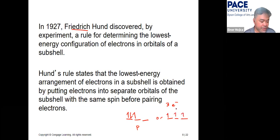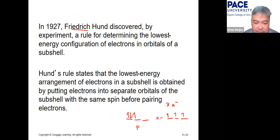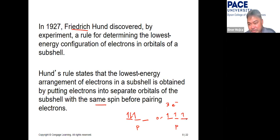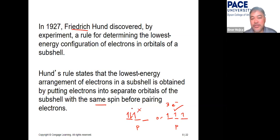For example, if you have three electrons filling a p subshell with three degenerate orbitals, you distribute one electron to each orbital first — all with the same spin — before pairing. This is the correct arrangement according to Hund's rule.